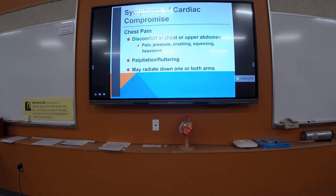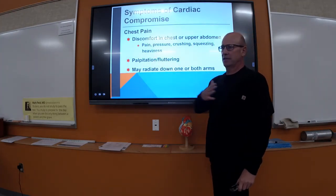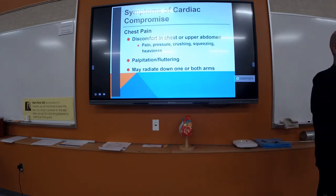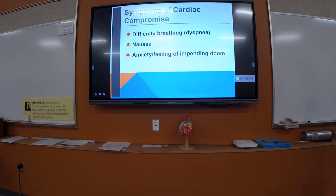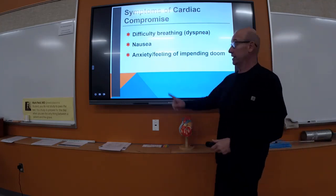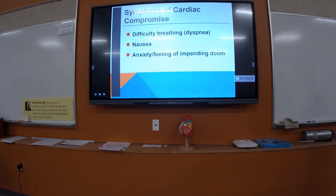A patient having an MI needs to go to the cardiac cath lab to have the vessel opened, a stent placed, or the clot removed. Additional signs include palpitations, radiation down one or both arms, and a feeling of doom or anxiety because the patient knows something is wrong — similar to shock.